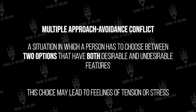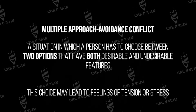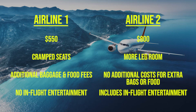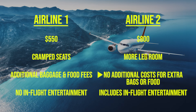The last type of Lewin's conflicts you should know is called a multiple approach-avoidance conflict. This is where a person must make a choice between two options that have both desirable and undesirable features. For example, let's say you have to choose which airline to fly. Airline 1 is cheaper, but it has cramped seats, additional fees for extra bags and food service, and no in-flight TVs. On the other hand, Airline 2 is more expensive, however their seats have more legroom, there aren't any additional costs for bags or food service, and there is in-flight entertainment.